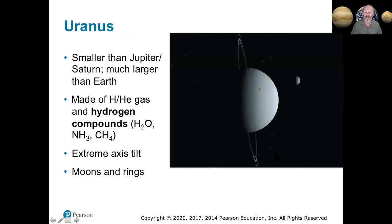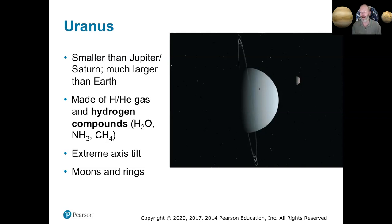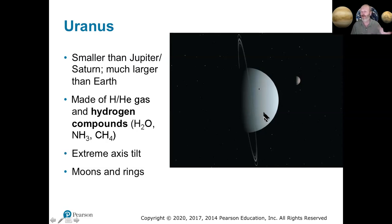Uranus is interesting for one major reason — it is on its side as it's going around. Venus is actually upside down as it's going around. Both are explained through impacts. Something came along and hit Venus and tipped it upside down. Something came along early in our solar system and hit Uranus, but since Uranus is gas, it didn't tip the same way — it unswirled and swirled back on its side under gravity. Uranus is mostly hydrogen and helium, and about 15 times the mass of Earth, so significantly smaller than Jupiter's 318 Earth masses.